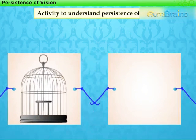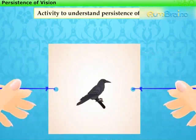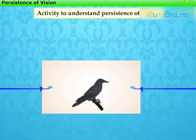Then flip the cardboard vertically and paste a picture of a bird on its other side. After this, twist the string and make the card twirl rapidly. On doing so, we will see the bird in the cage.